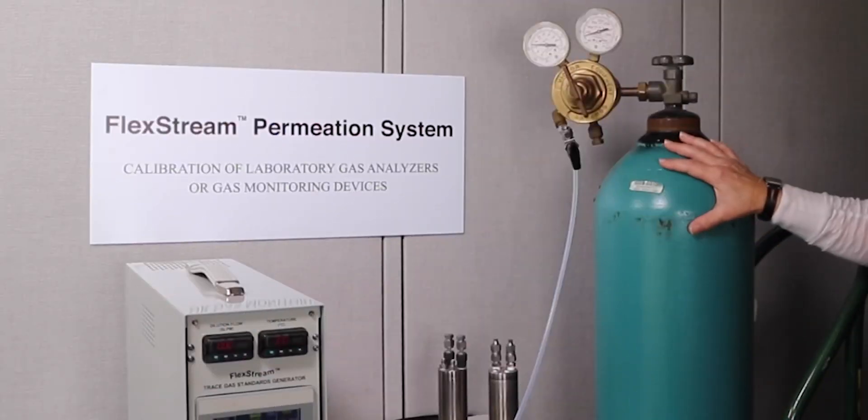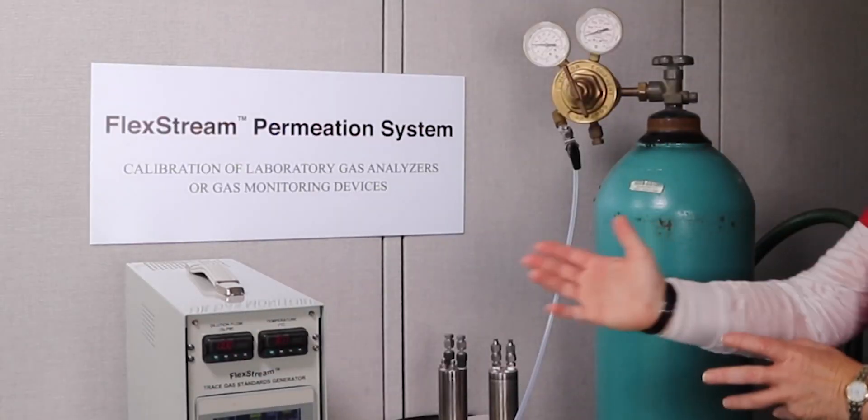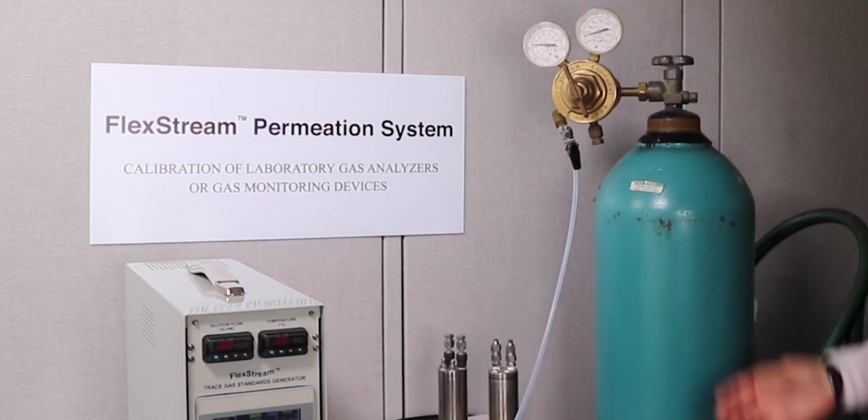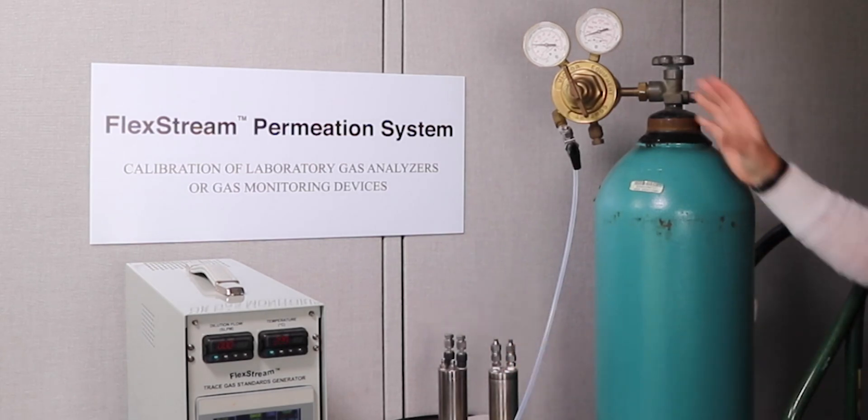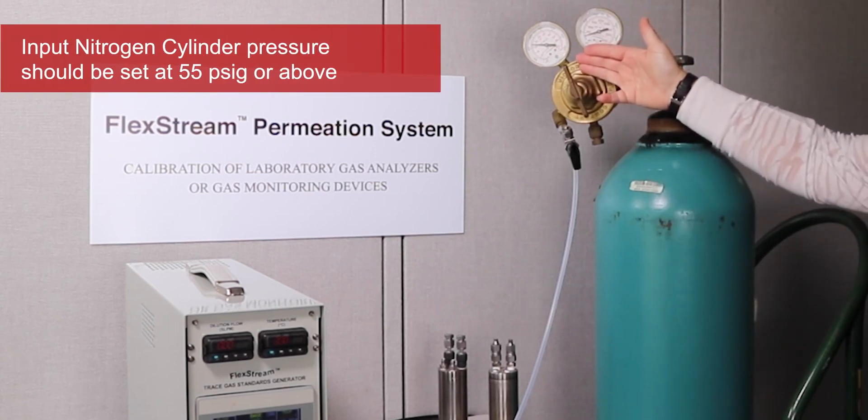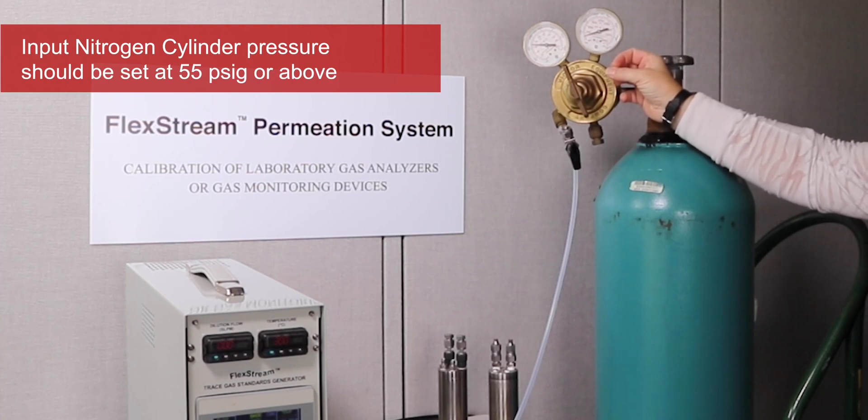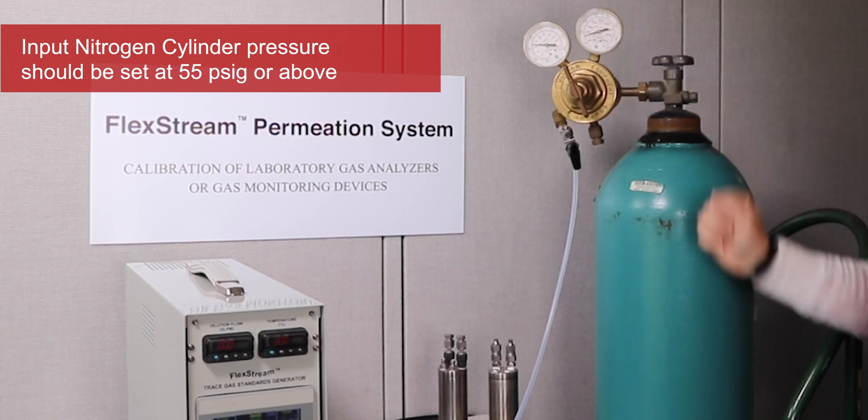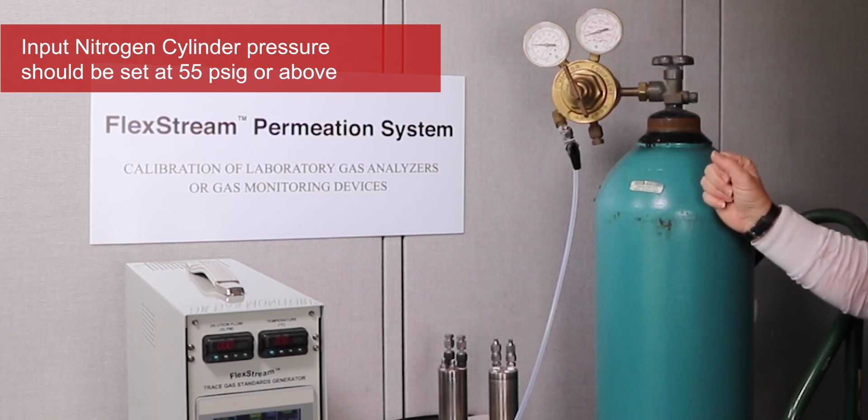Today we're going to be using a nitrogen cylinder to connect to our FlexStream base module. When you're using a cylinder gas, you want to make sure that your regulator is set to a certain pressure. We're setting it above 60 psi, but 60 psi and above is fine. You need to be above 55 psi. So our cylinder here is set to about 60 or 65 psi.